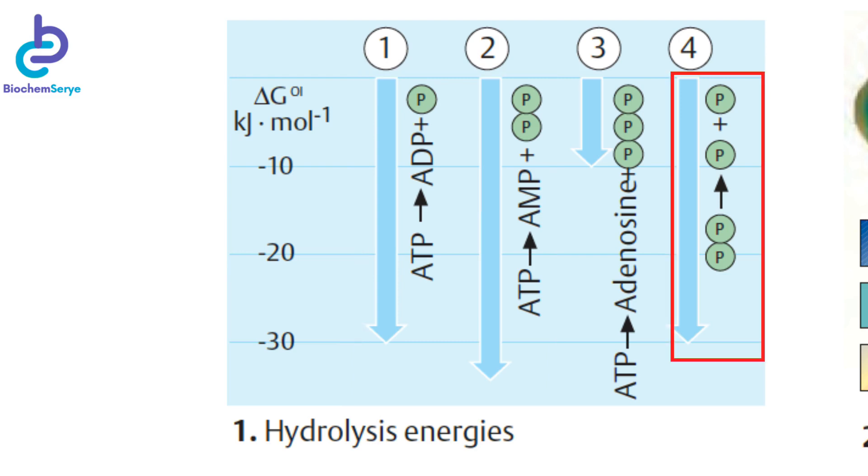Even the hydrolysis of diphosphate, also known as pyrophosphate, still yields more than negative 30 kilojoule per mole. By contrast, cleavage of the ester bond between ribose and phosphate only provides negative 9 kilojoule per mole.